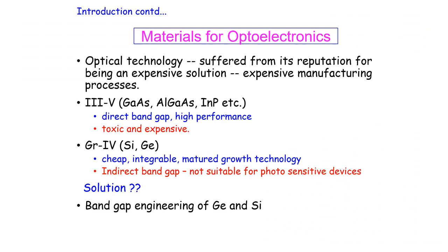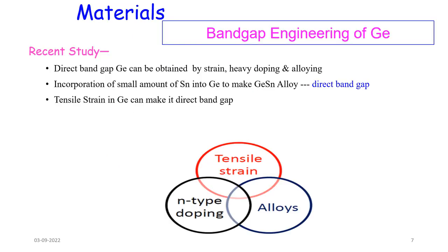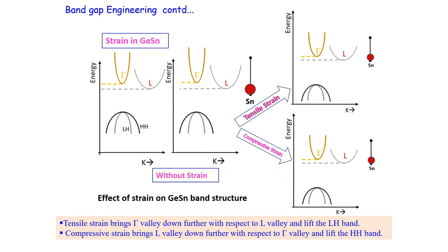We typically use III-V materials for the optical source, but germanium can also be used as an optical source. This is because the gap between the direct and indirect band gap in germanium is very small — around 0.14 electron volts — so this can be overcome by band gap engineering. In band gap engineering, we obtain a direct band gap using tensile strain, n-type doping, and alloying.